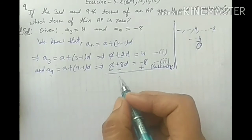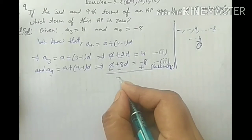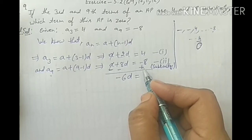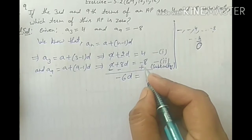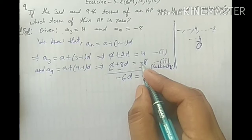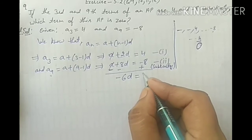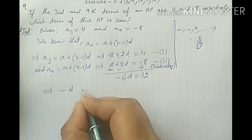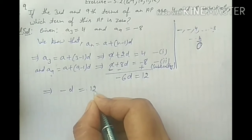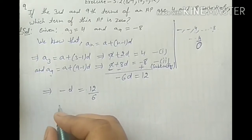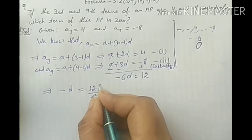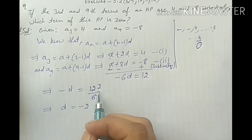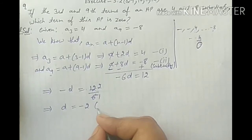Plus 2D minus 8D gives minus 6D. And on the right side, plus 8 plus 4 equals 12, because minus 8 becomes plus 8 after sign change. So minus 6D equals 12. Divide by 6: since minus D equals 2, so D equals minus 2. And D is the common difference, which is very important in AP - AP की जो next term है, वो D पर ही depend करती है।